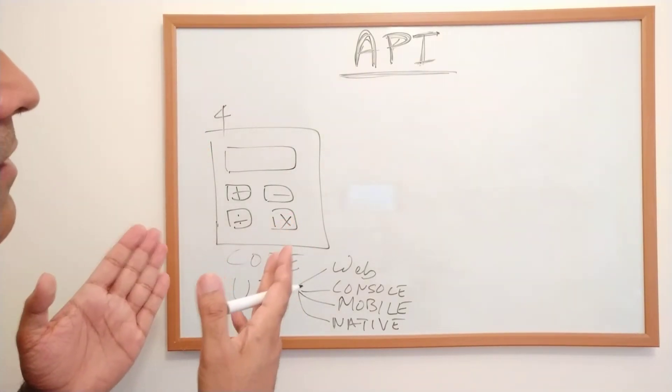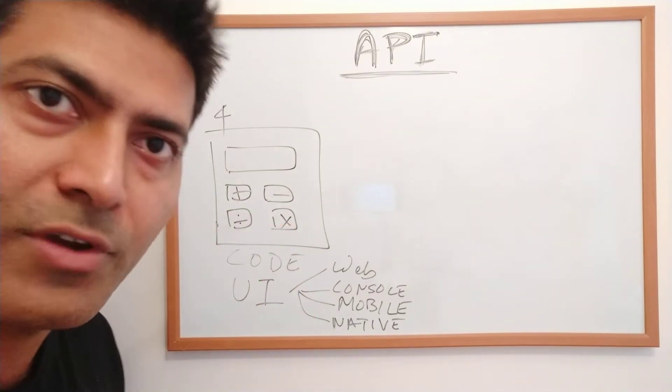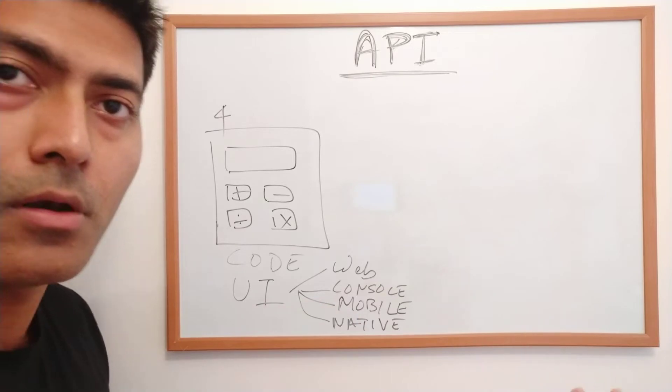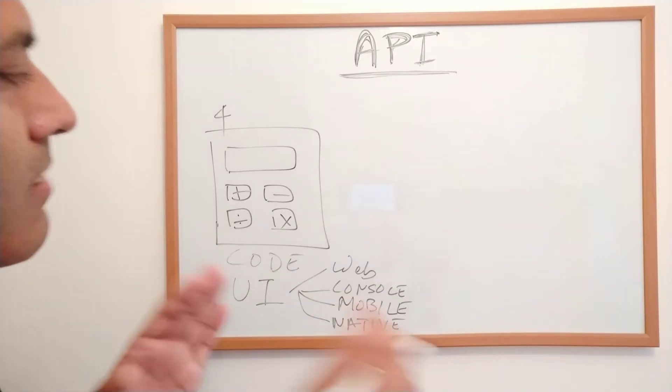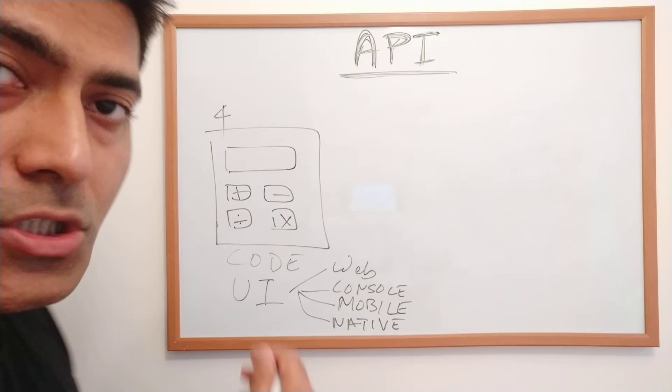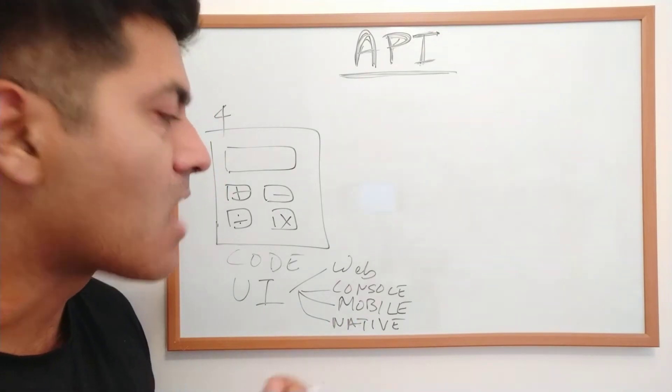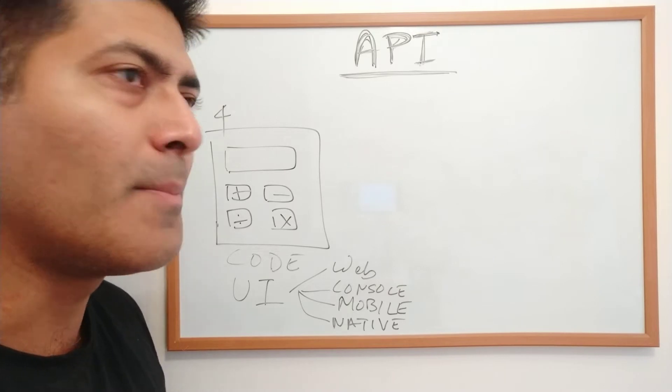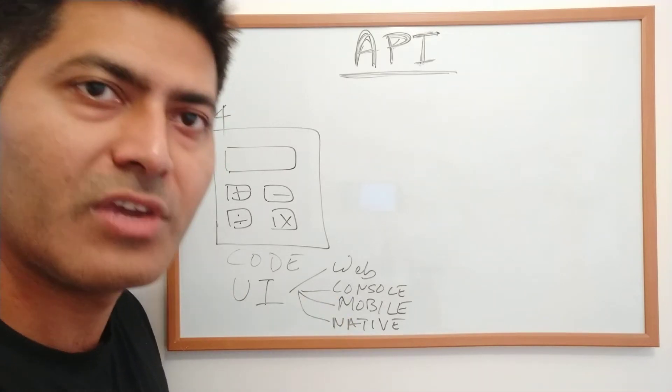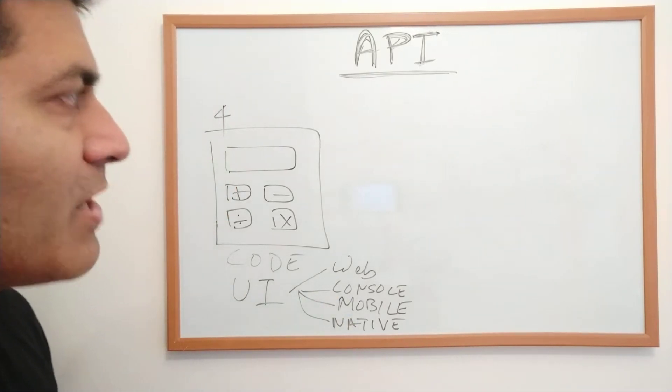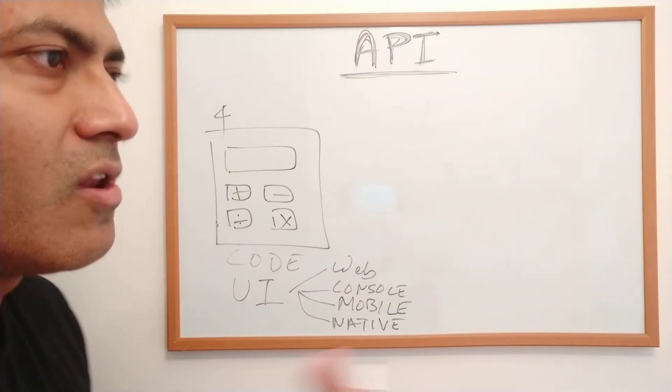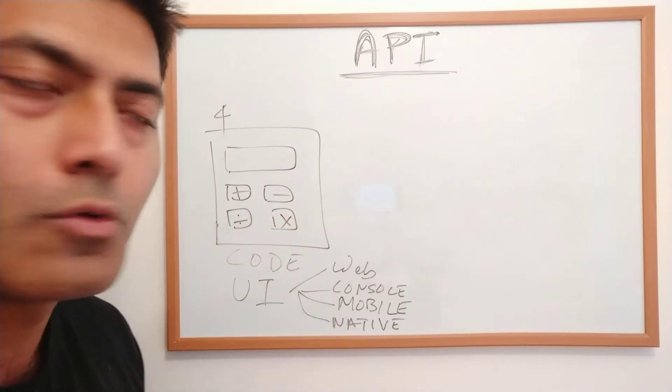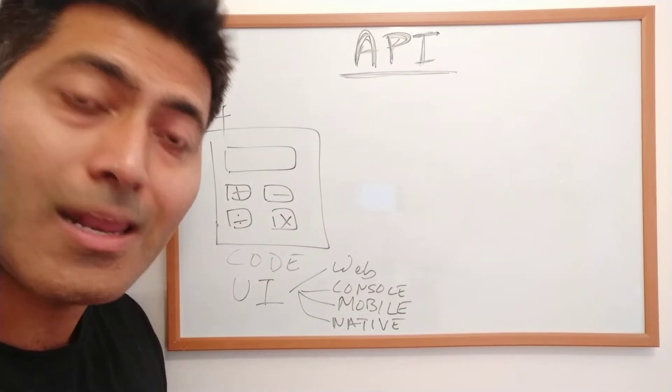For this calculator application you've built, you want other people to interact with it. For example, in the beginning you launch this calculator on the web. You create a website called AmazingCalculatorByRavi.com. When you create this website, people will come and use the web interface to interact with your calculator to do calculations.